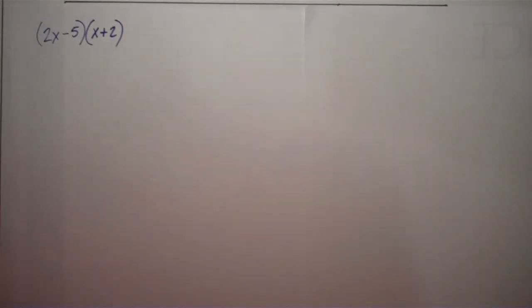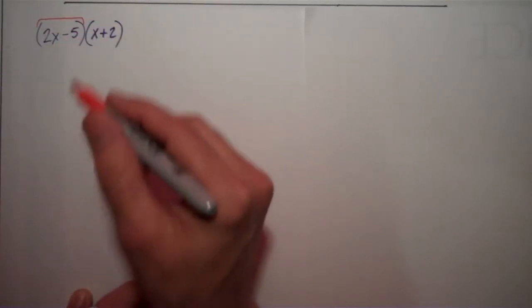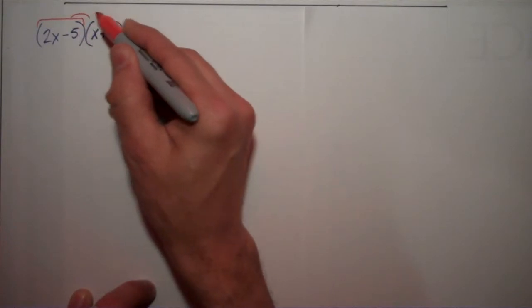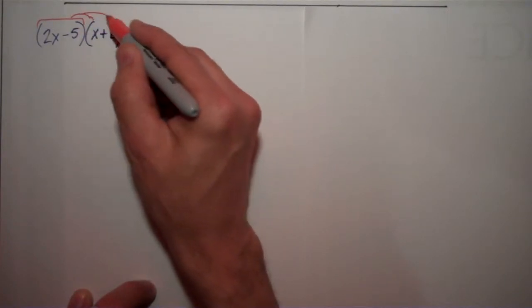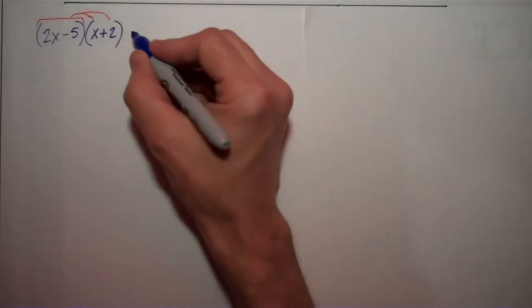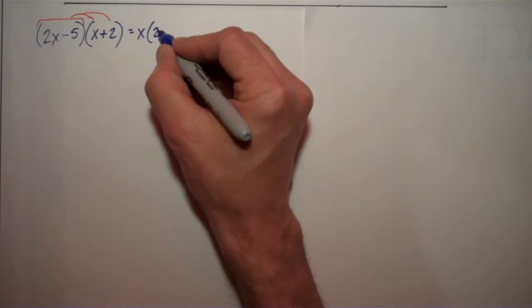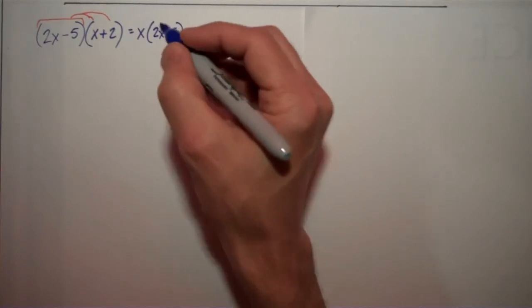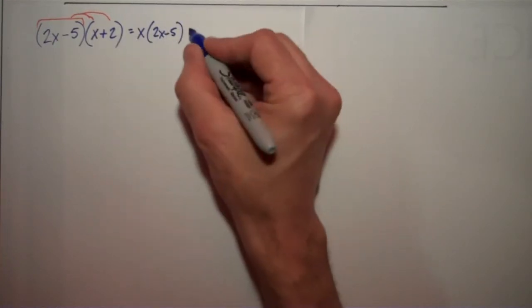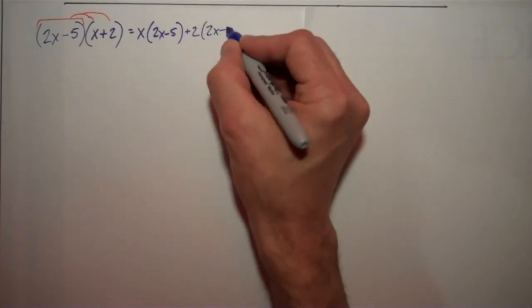So what I'm going to do is I'm going to take this binomial, the first one, and I'm going to distribute it over the second one. So that means I'm going to say this equals x times 2x minus 5 plus 2 times 2x minus 5.